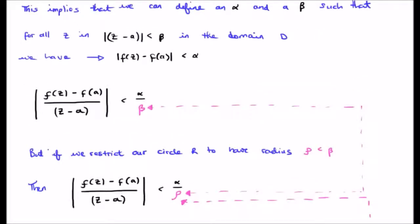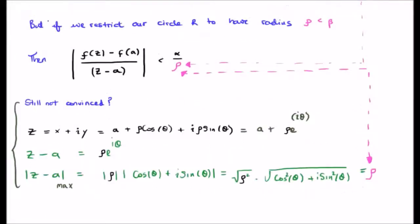But if we restrict ourselves to the circle r, the radius rho is got to be less than beta, and therefore we can rearrange or we can rewrite this equation as I've done at the bottom of your screen where we insert rho instead of beta. If you're not convinced you can have a look at the manipulation at the center of your screen. Something I'm not going to dwell on so you can pause the video.